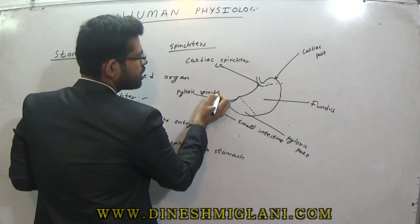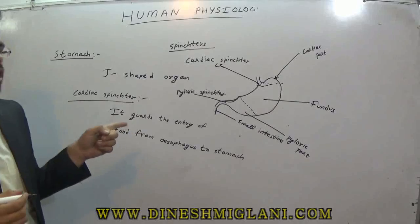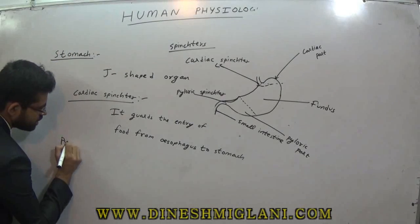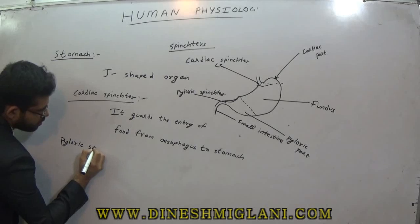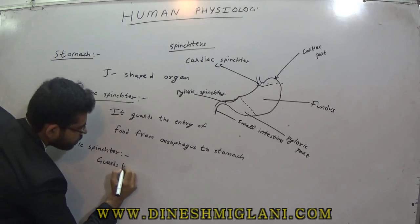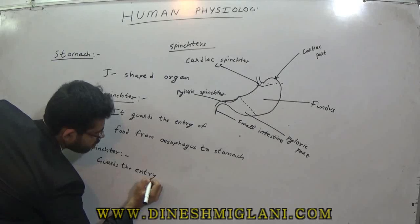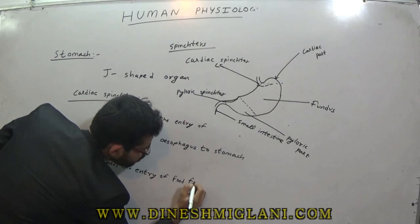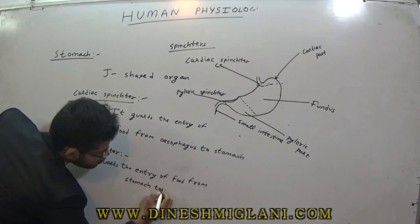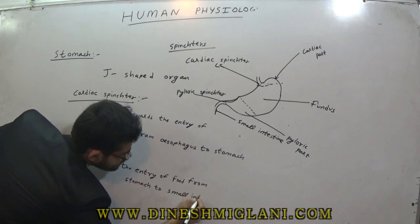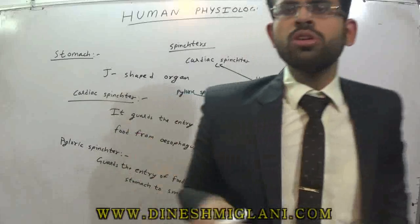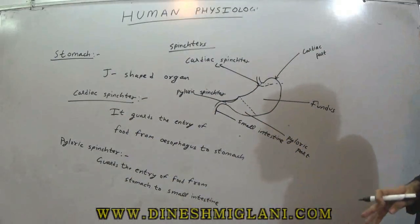If the sphincter is contracted, nothing can enter that organ; it will only enter when the sphincter relaxes. Every organ has its own sphincter to guard it. Our stomach has two sphincters. One is the cardiac sphincter, which guards the entry of food from the esophagus to the stomach. The other is the pyloric sphincter, which guards the entry of food from the stomach to the small intestine.